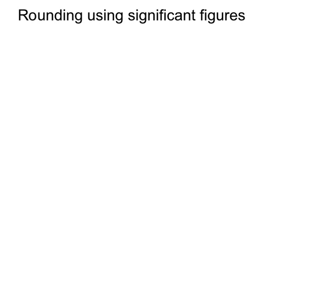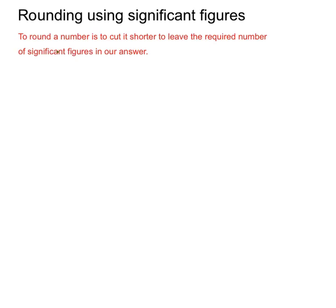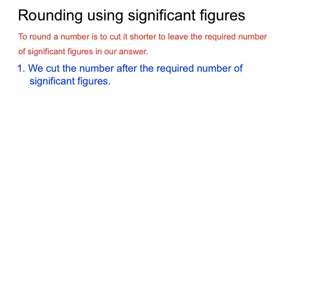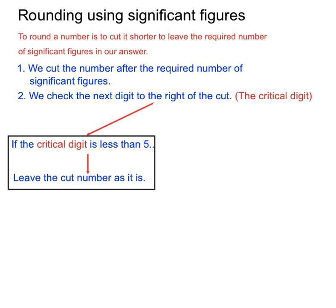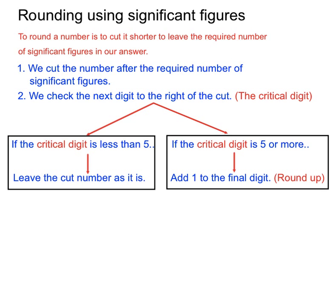We're often asked to round using significant figures. To round a number is to cut it shorter to leave the required number of significant figures in our answer — so we'll get a long answer from our calculator and be asked to round off to a certain number of significant figures. The way we do this is we cut the number after the required number of significant figures, then we have to check the next digit — it's called the critical digit. If that critical digit is less than five, we leave the cut number as it is. But if that critical digit is five or more, we add one to the final digit — we round up.